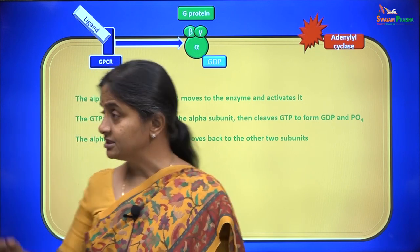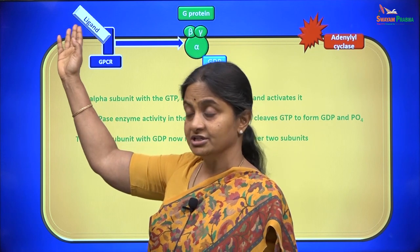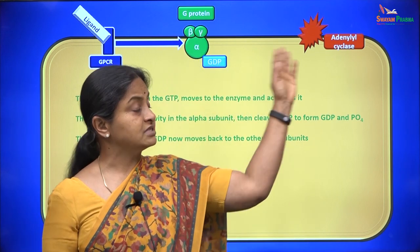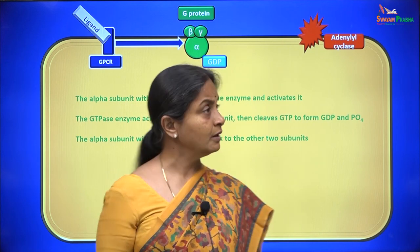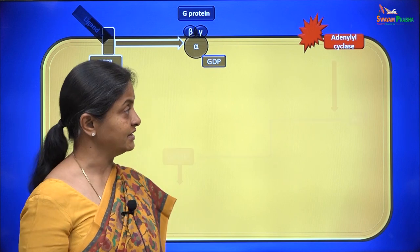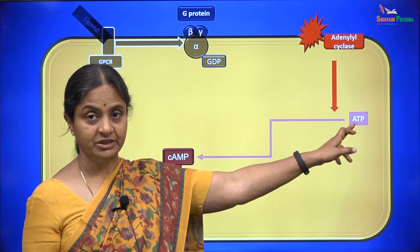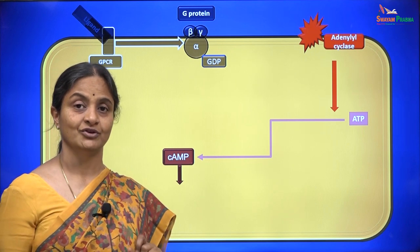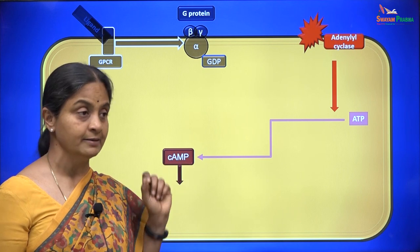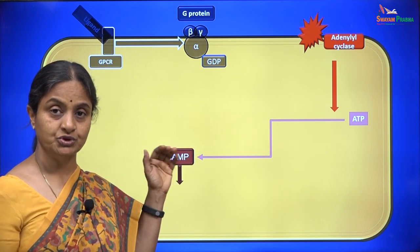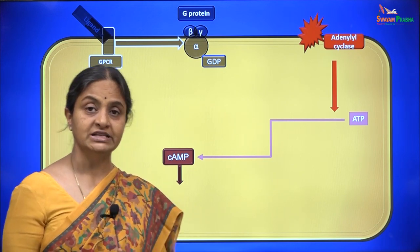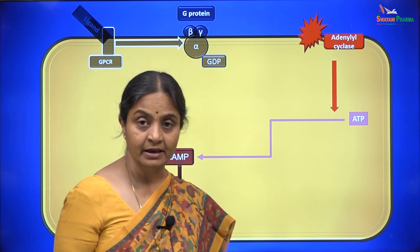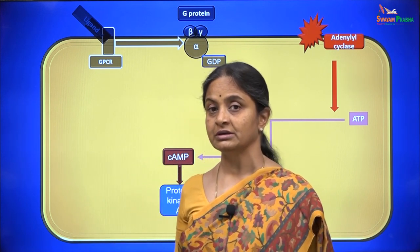If the ligand still remains at adequate concentrations outside, it can continue to stimulate the GPCR and the same cycle of events will go on. Once the enzyme adenylyl cyclase is activated, it will act on adenosine triphosphate within the cell to produce cyclic AMP or cyclic adenosine monophosphate — a very important signaling molecule. Cyclic AMP can activate protein kinase A, and protein kinase A can phosphorylate proteins within the cell to produce cellular responses.